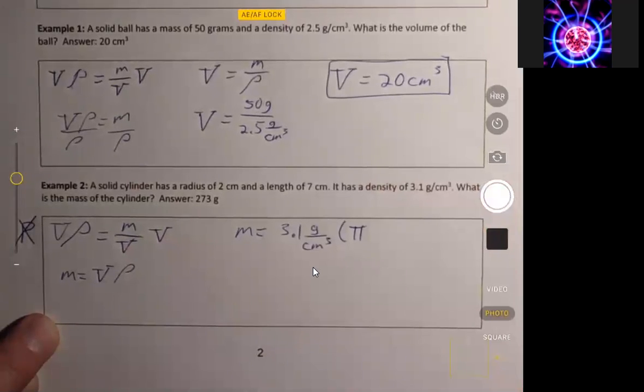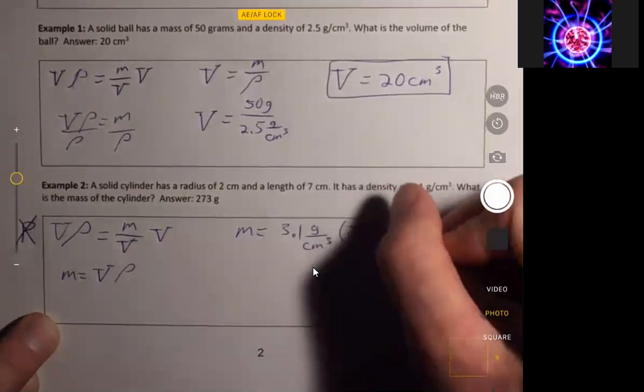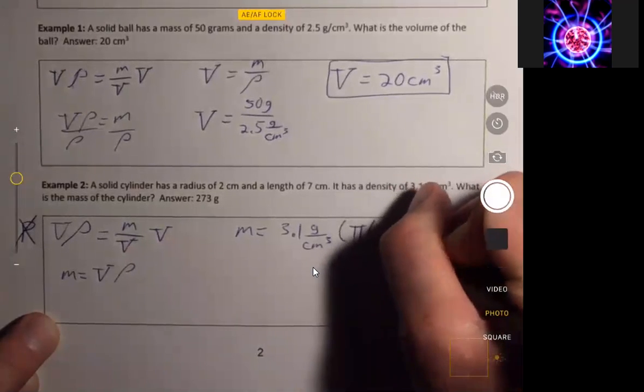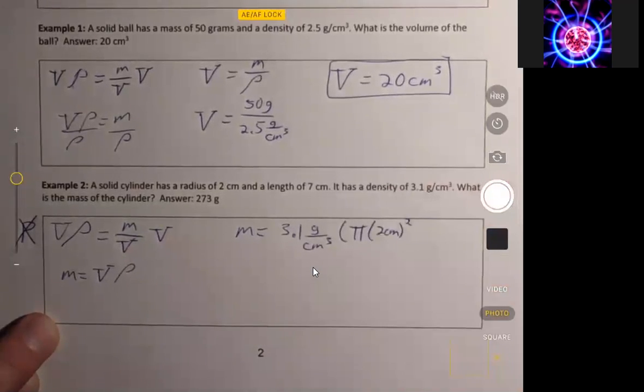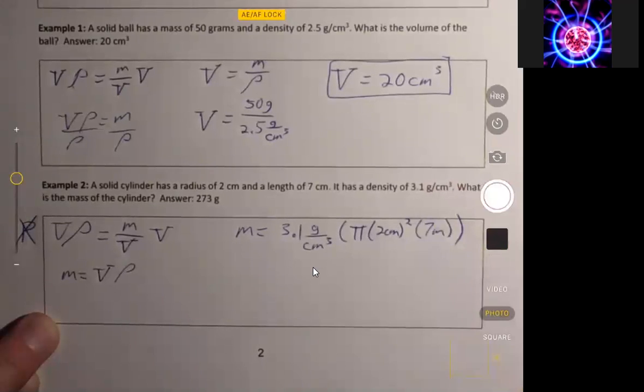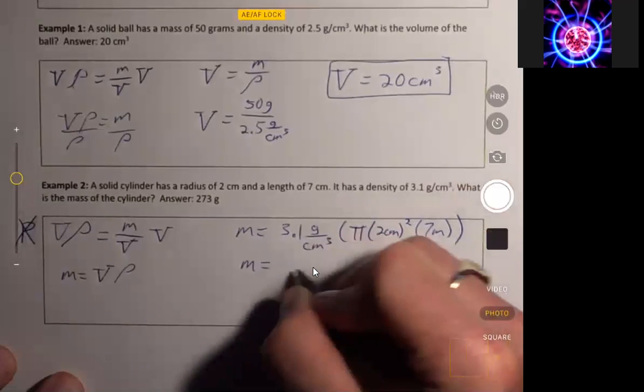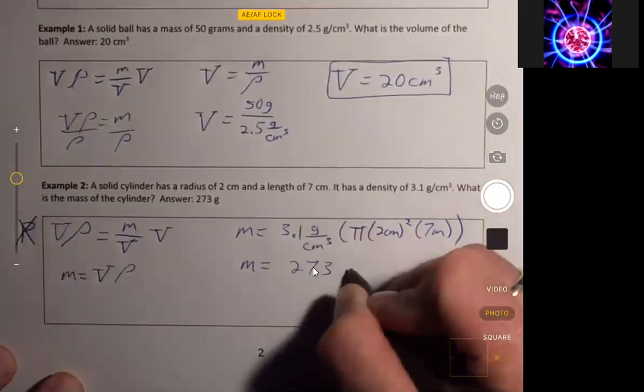Volume of a cylinder, well, we find the area of the base, which is pi times 2 centimeters squared, so pi r squared, and then we multiply by the height. And that comes out to 273 grams.